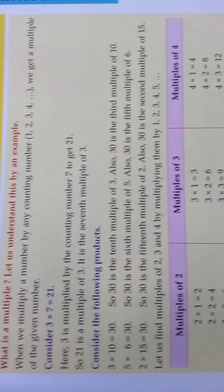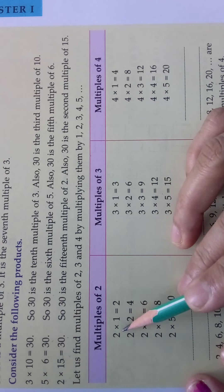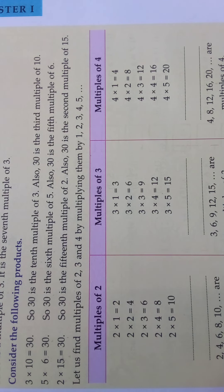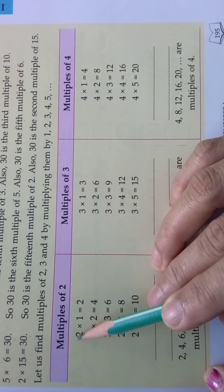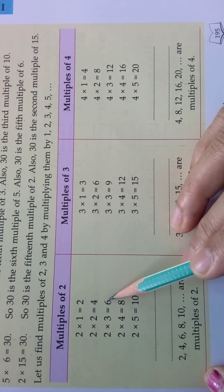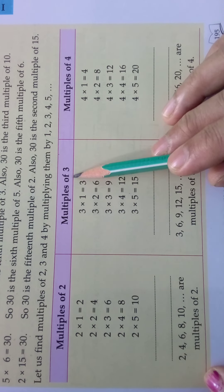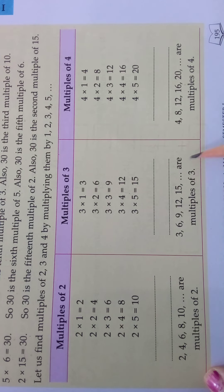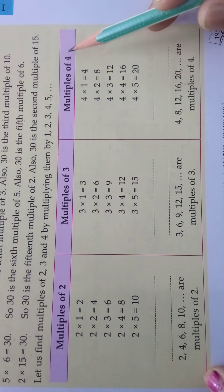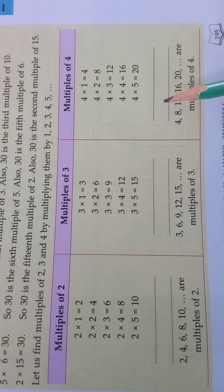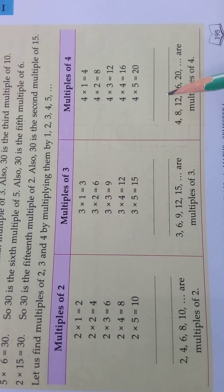Multiples of 2 are nothing but the 2 table: 2, 4, 6, 8, 10 — these are all multiples of 2, and it will go on. Multiples of 3 are: 3, 6, 9, 12, 15 — like that it will go. Multiples of 4: 4, 8, 12, 16, 20, 24, 28 — like that it will go. Come, we will go to the next page.